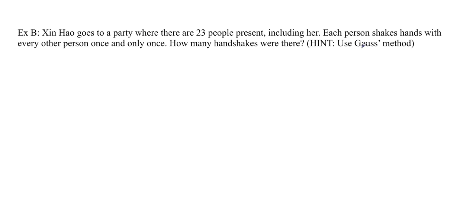So the next example asks us to apply this. Xinhao goes to a party where there are 23 people present, including her. Each person shakes hands with every other person once and only once. How many handshakes were there is the question. And the hint is to use Gauss's method. You can pause the video and try all of the questions now that you know the Gaussian method.